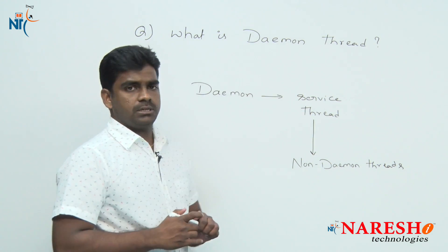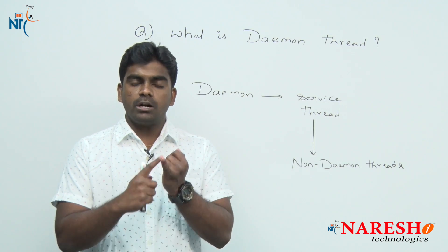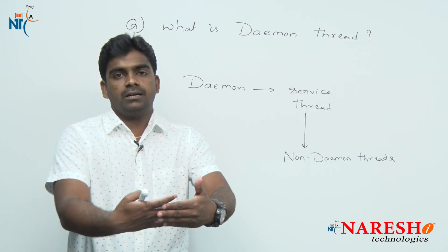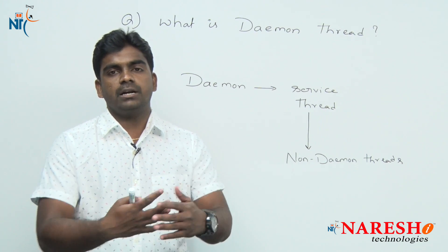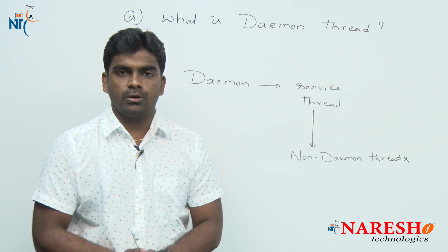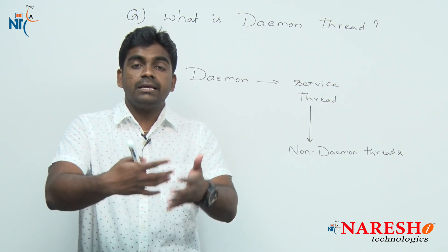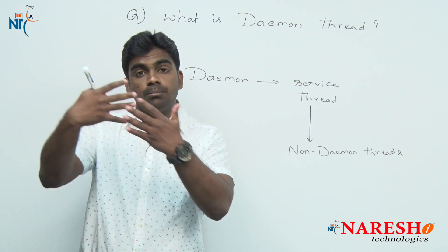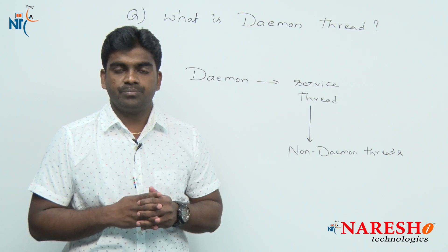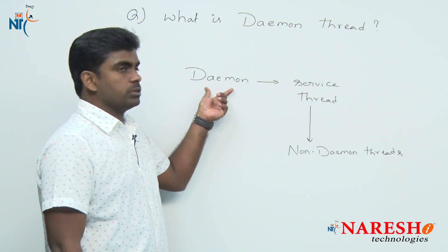What are the non-daemon threads? Java application supports two types of threads: non-daemon threads and daemon threads. Non-daemon threads are front-end threads — they execute the front-end logic of the application, like reading information, printing and displaying output. Daemon threads are the threads running behind the application in the background, providing service to non-daemon threads.